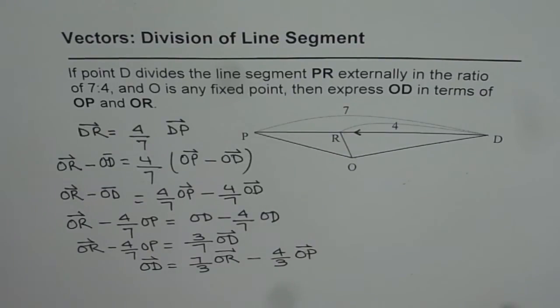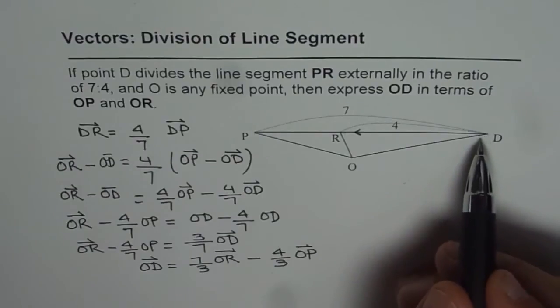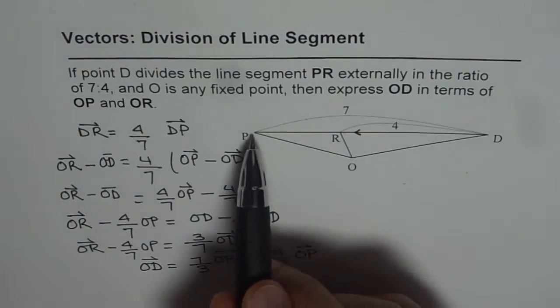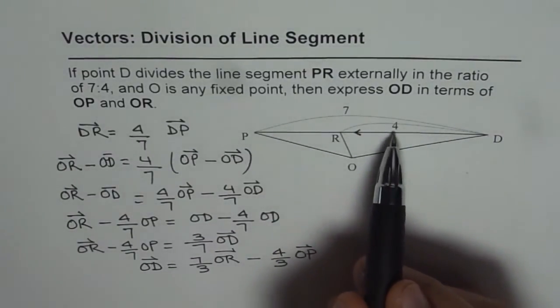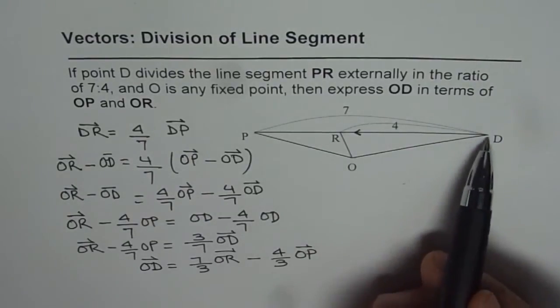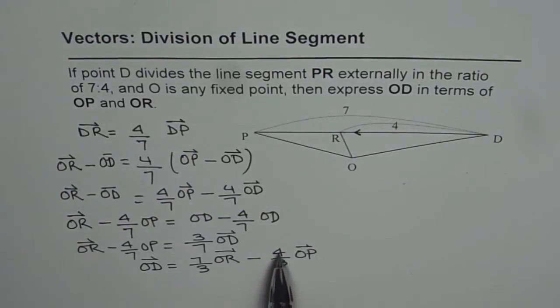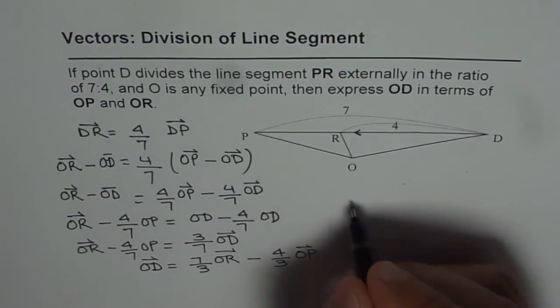So, as we can see from here, OD is 7 over 3 - 3 is 7 minus 4 - OR minus 4 over 3 of OP. So that is the relation which will give us the value of OD. So, we get OD equals to.